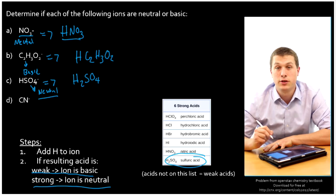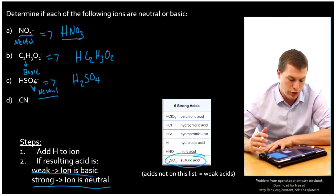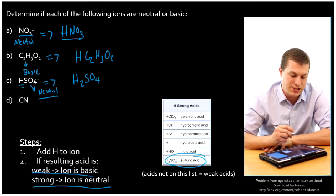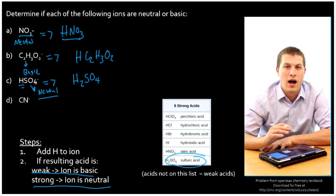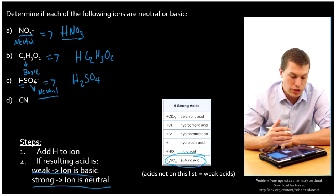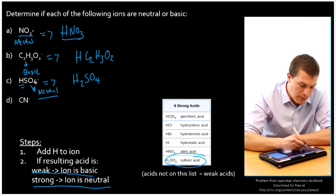Now, secretly, HSO4 minus can actually be one of those weird exceptions that can give up another proton, which you can actually sort of see because it has another H right there that it can give up. So this one actually turns out to be a little acidic. That's one of those weird exceptions that most teachers wouldn't expect you to be able to predict. And I certainly wouldn't. But you should know that HSO4 actually can give up one of those other protons. But from our rules here, you'd predict that would be neutral.